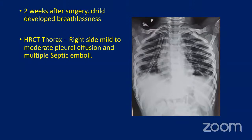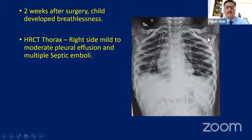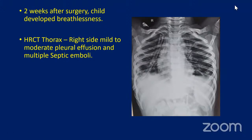Septic emboli are different from what an IVC filter prevents. The IVC filter prevents a large thrombus from blocking the pulmonary artery, but you can't really prevent septic microemboli. Such patients have a very high mortality rate. Having a multidisciplinary team is extremely important. We have had considerable mortality in this particular group, and other than the initial decompression, there is not much more we can do meaningfully.